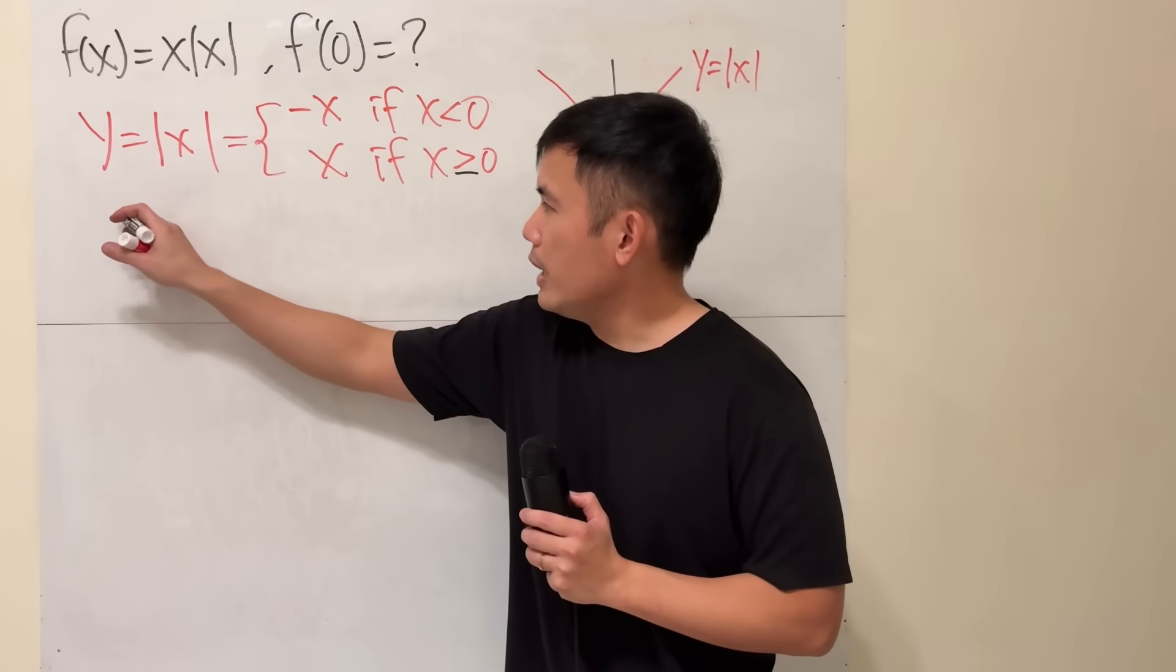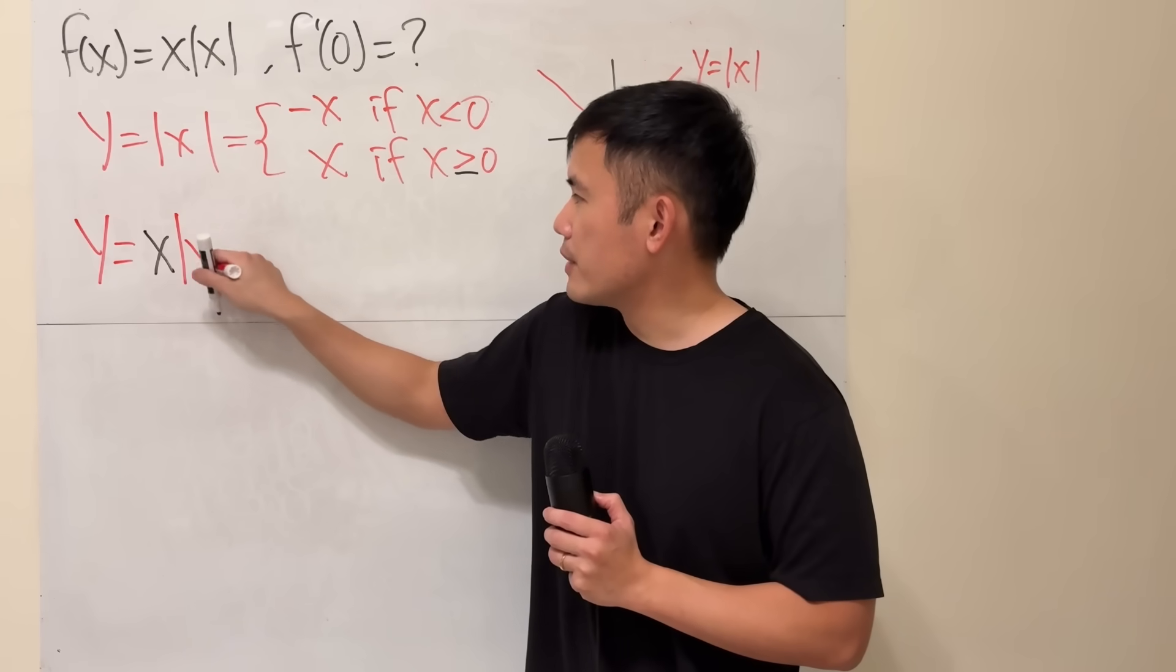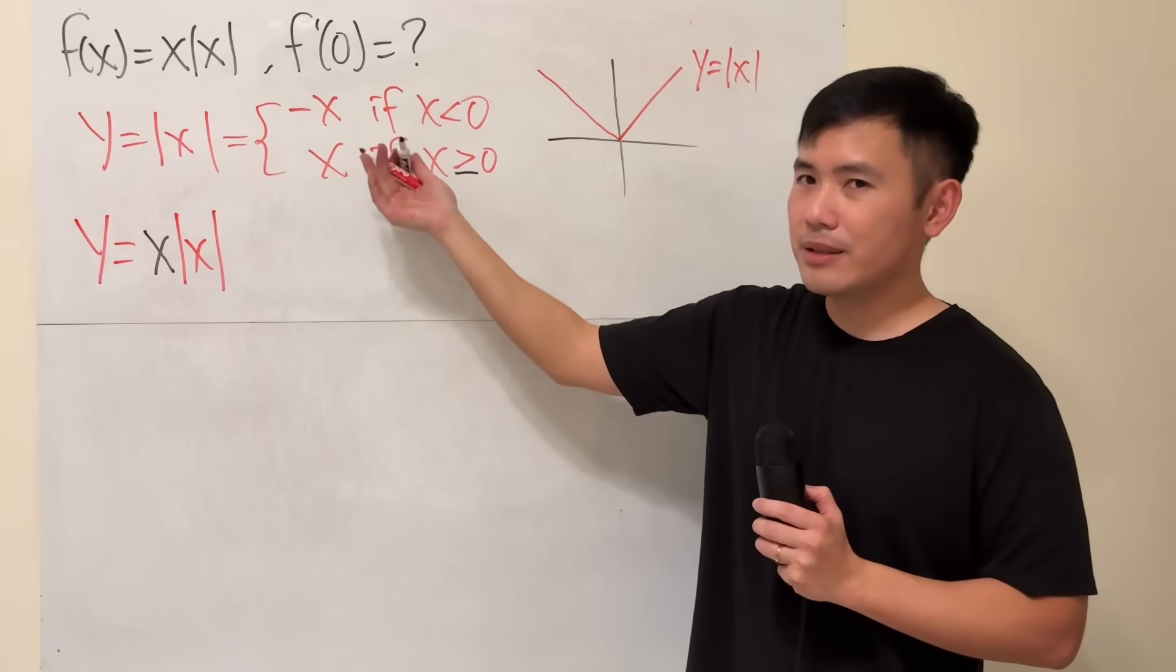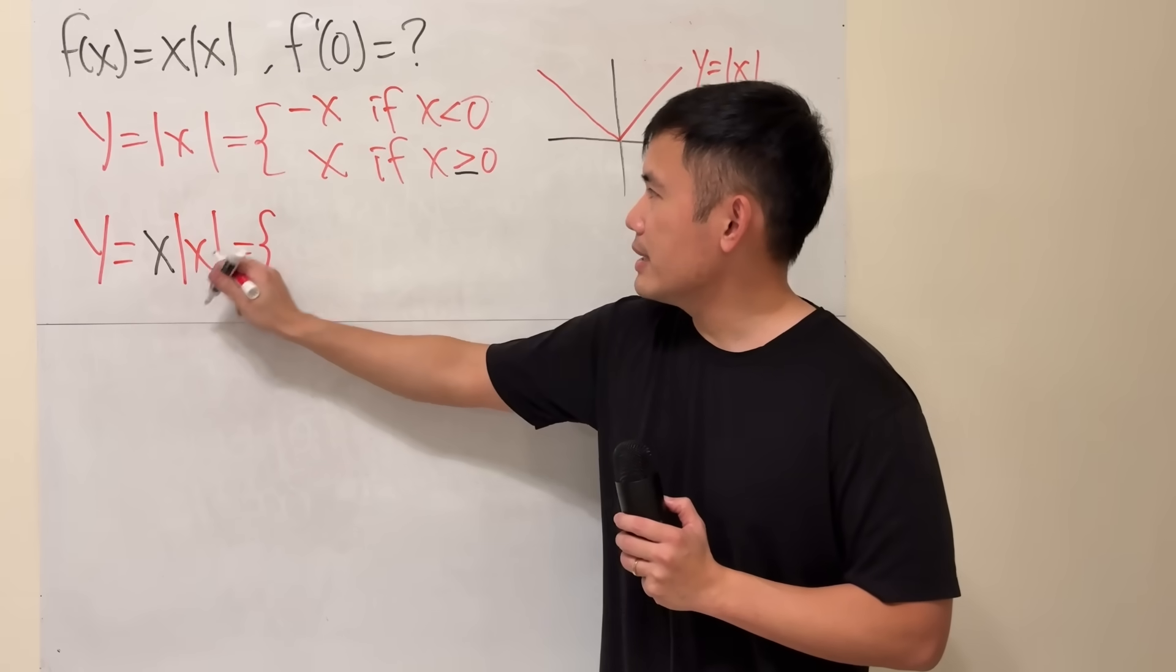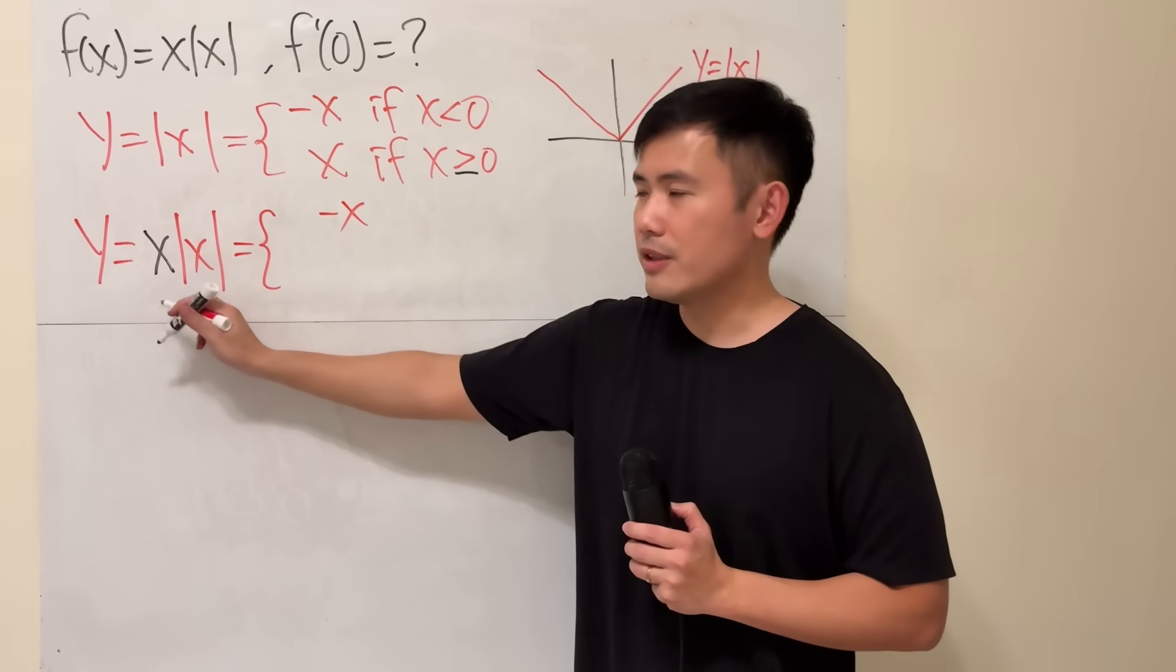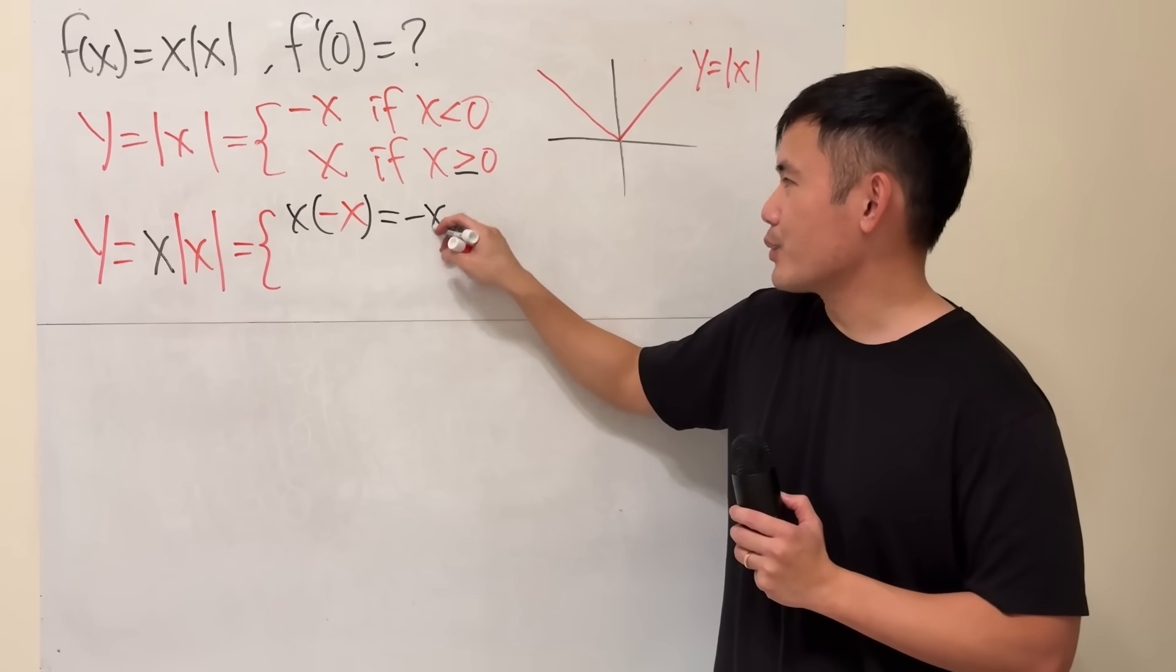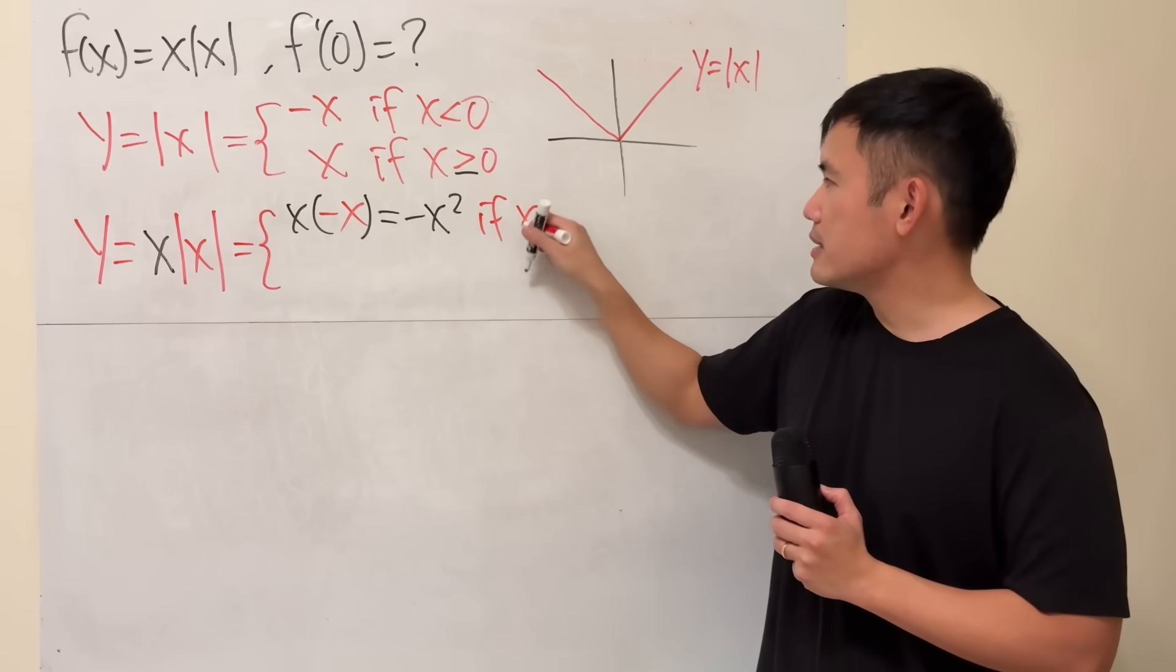Now, when we have this, it's going to be interesting. We have y is equal to x times absolute value of x. What we will do is the same thing, just like the piecewise definition. This right here is that, right? It's negative x. But remember, we have the x in the front, so x times that. That will give us what? Negative x squared. This is still true if x is less than 0.